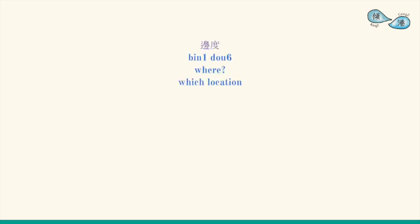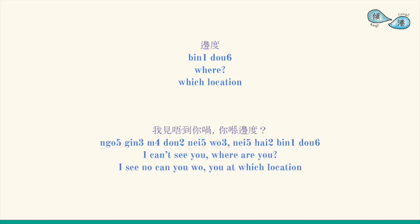邊到 specifically means 'where'. For example: 我見唔到你喲，你喺邊到? (I can't see you, where are you?)